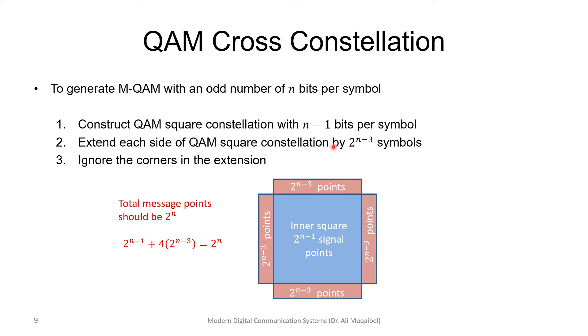We can build the inner square. Then we extend at each side 2 raised to the power N-1, which is 2 raised to the power 5-3, which is 4 points here, 4 points there, and we get the constellation. The total points should be 2 raised to the power N.